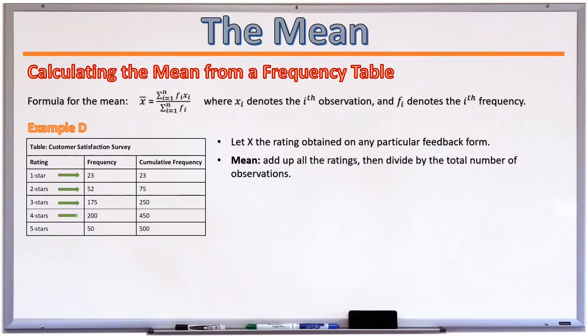In the table above, we have 23 one-star ratings, 52 two-star ratings, 175 three-star ratings, and so on. So this gives us 1 times 23, in other words, one star, and 23 of those, plus two stars, and 52 of those, plus three stars, and 175 of those, plus four stars, and we had 200 of those. And last but not least, we had five stars, and we had 50 of those. We divide all of that by 500, the total number of observations.